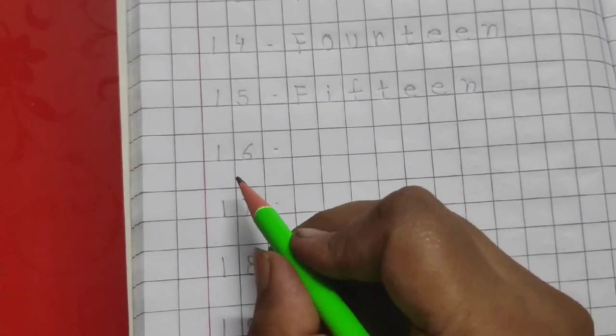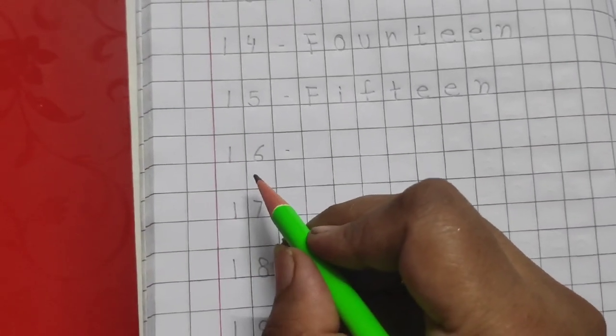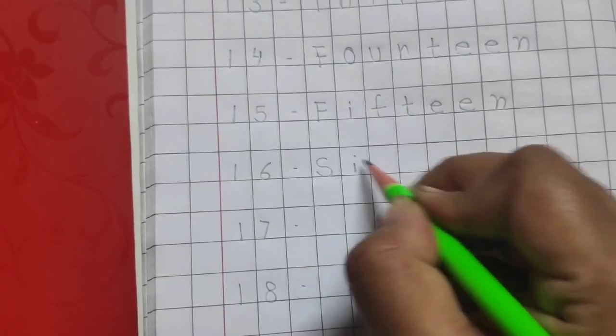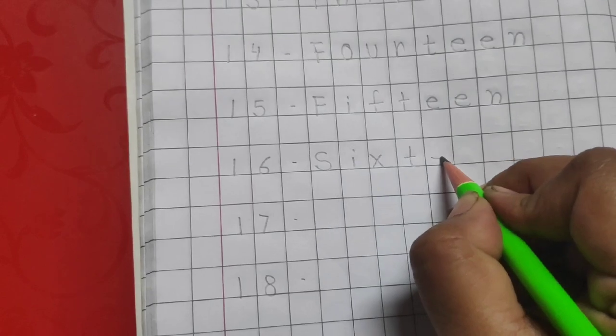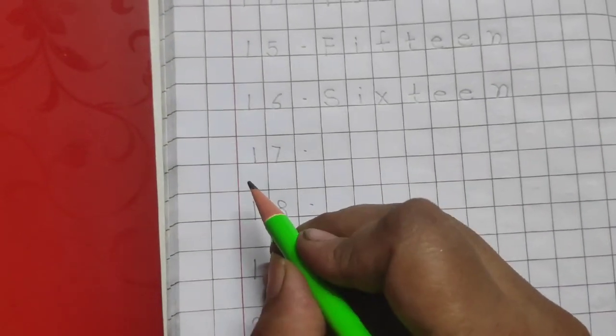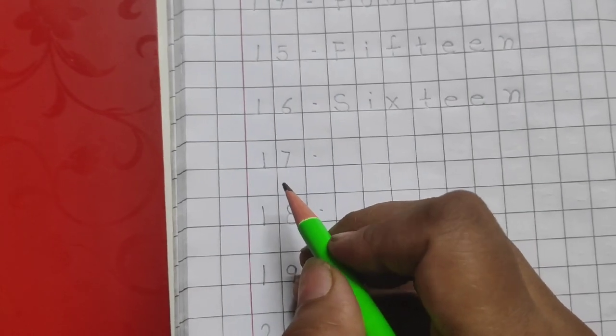And the next number is 16. The number name for 16 is S-I-X-T-E-E-N.